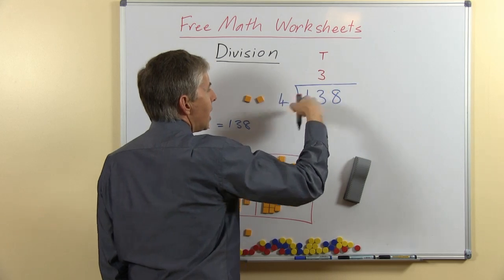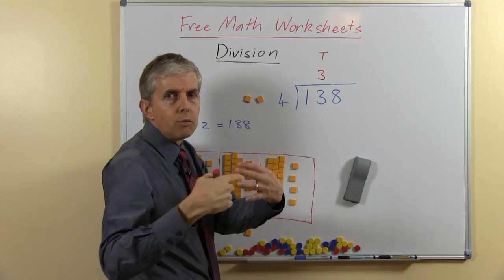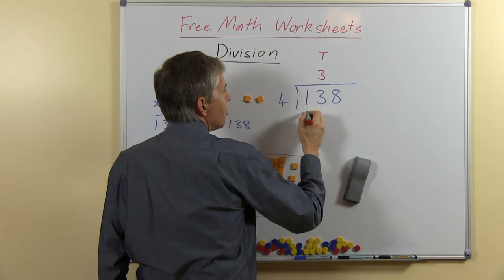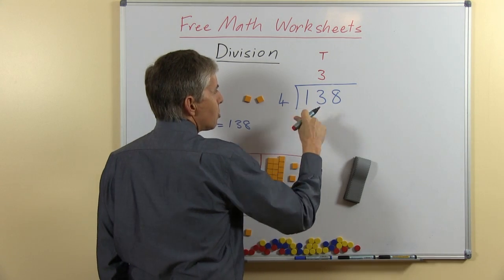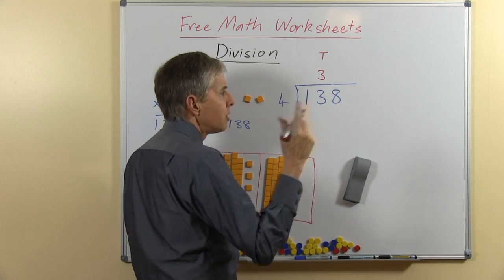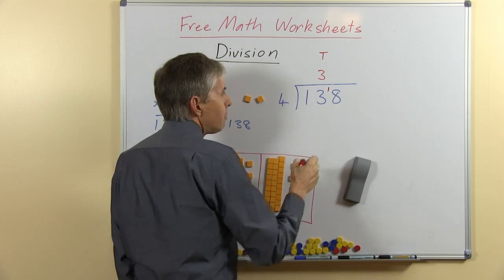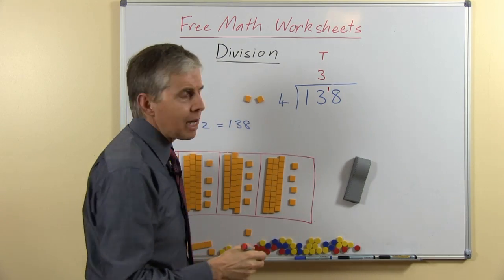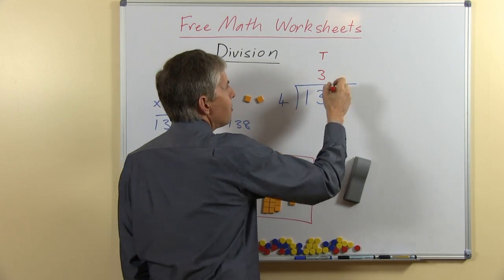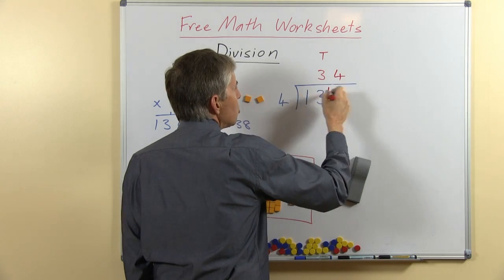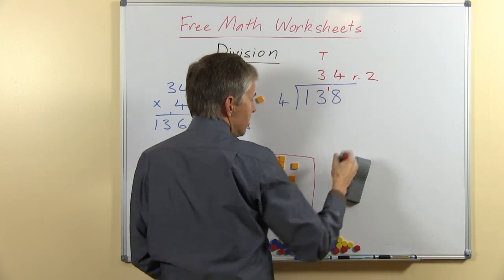We've got 13 10's, share among 4, how many will each person get? They'll get 3 and how many will that distribute? 3 4's are 12, we do this in our head, take the 12 away from the 13, how many are left? 1 left. Put that next to the 8, we've now got 18 1's, share 18 among 4, everybody gets 4, 4 4's are 16, there are 2 left, there's the remainder.